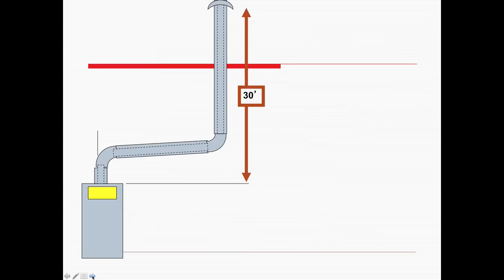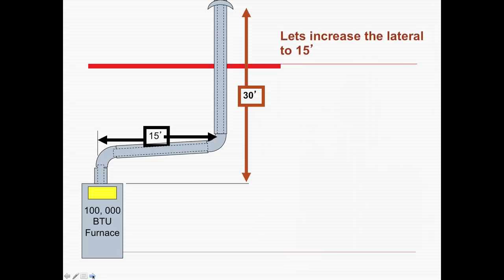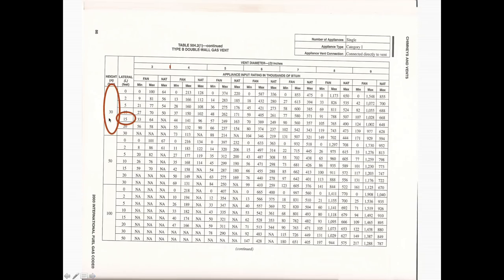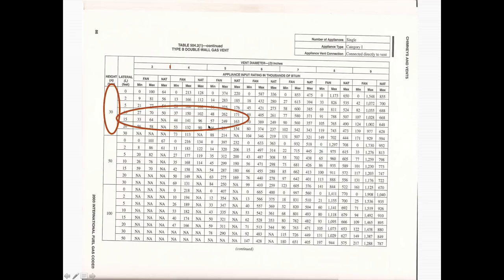Now we have still a 30-foot height but a longer lateral — 15 feet. Same height, same furnace, just a 15-foot lateral. Now here at 30 feet, 15-foot lateral, if you go four-inch you'll only get 96,000 BTUs, so you can't do 100,000 on there. You have to go to the natural column on five-inch, where you can do 163,000 BTUs.